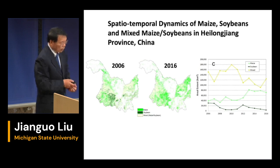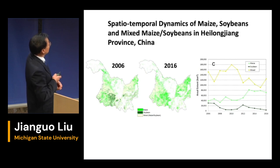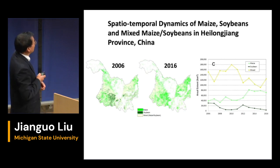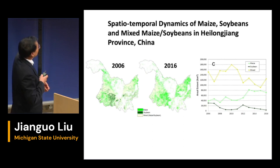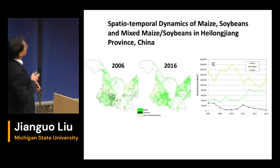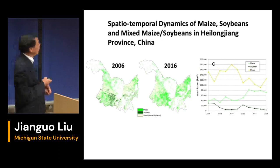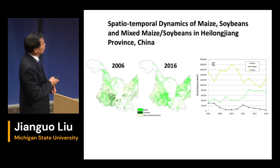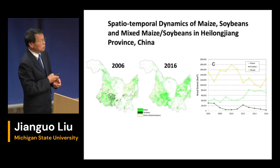We can see the dynamics of maize — shown in green — and soybean in dark green, with a mixed area shown as well. Comparing the map from 2006 to 2016, you can see more and more maize. Over time, soybean has been declining while maize has increased, with the rest being a mixed area.